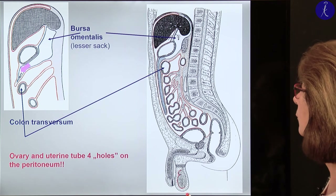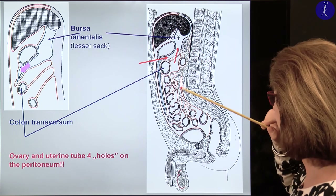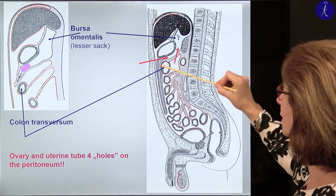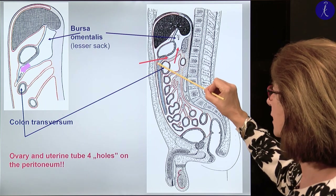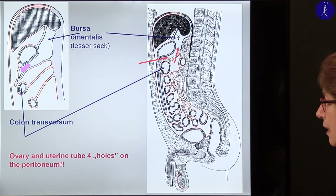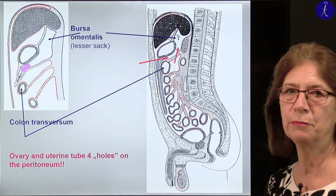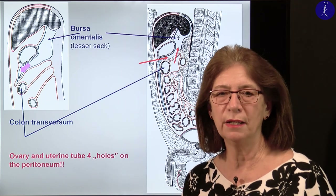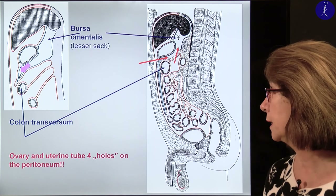How can we get access to the bursa omentalis? Through the mesocolon transversum or through the gastrocolic ligament. The gastrocolic ligament is actually the uppermost region of the omentum majus. Previously through the epiploic foramen there was no possibility to get close to the pancreas, but nowadays with endoscopic techniques this is also possible.